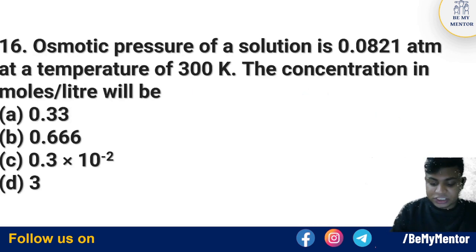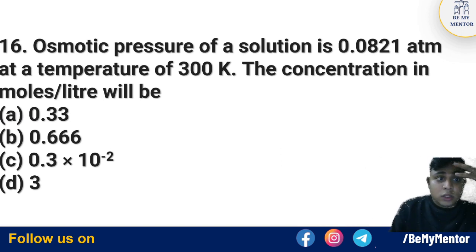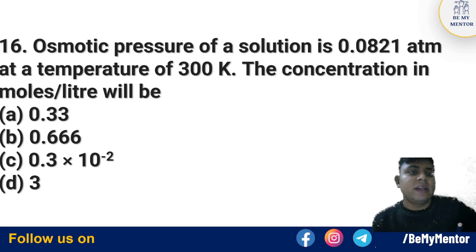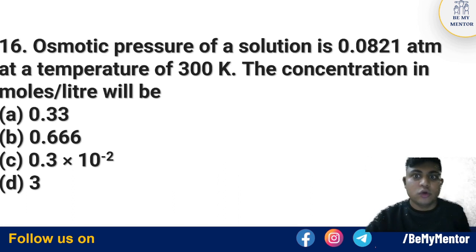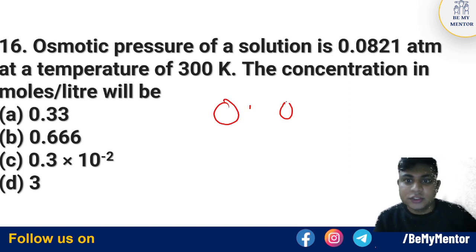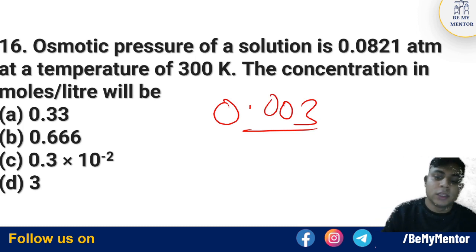Question number 16: The osmotic pressure of a solution is 0.0821 atm at a temperature of 300 degrees Kelvin. We need to find the concentration in mol per liter. We have the osmotic pressure and temperature, so we can calculate the concentration. The answer is 0.003 mol per liter.